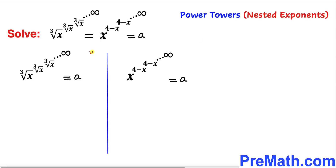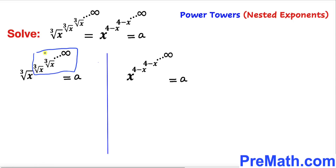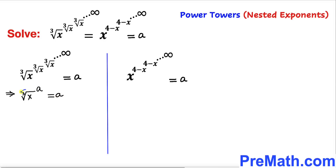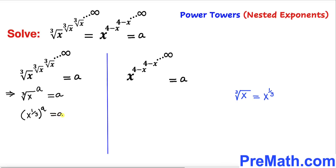Now let's take care of the first equation on the left-hand side. We observe that this whole infinite power tower equals a, and therefore this inner infinite power tower also equals a. So the left-hand side can be written as cube root of x, raised to the power a, equals a. Now, cube root of x can be written as x to the power 1 over 3, so the left-hand side becomes x to the power 1 over 3, raised to the power a, equals a.